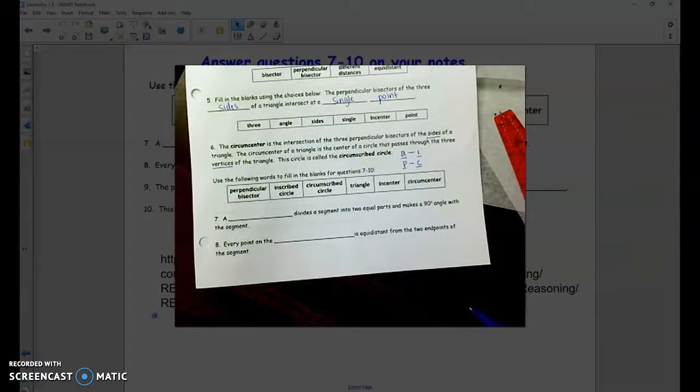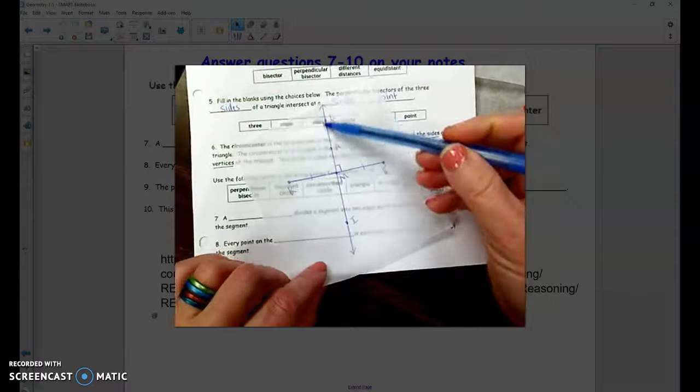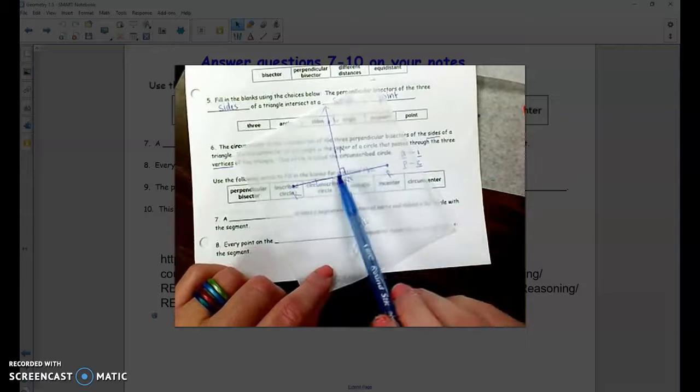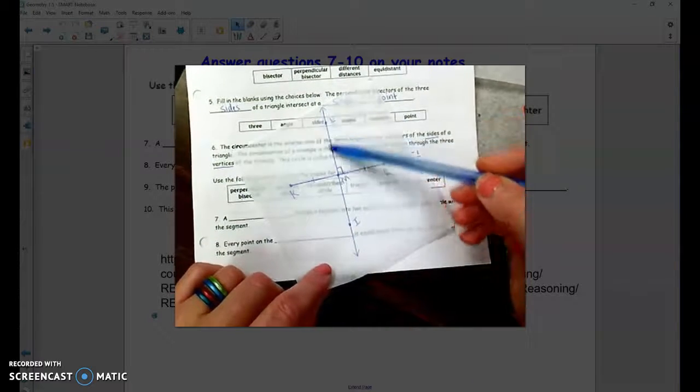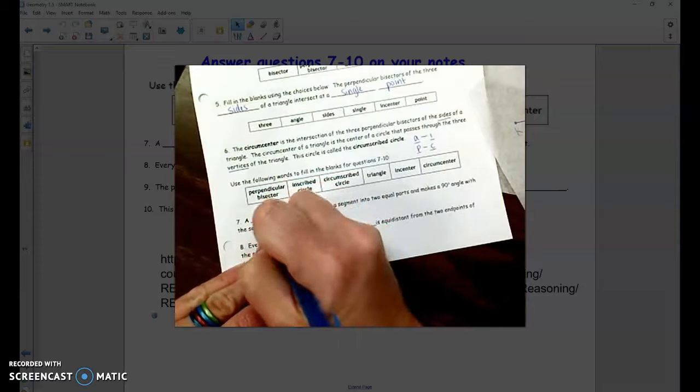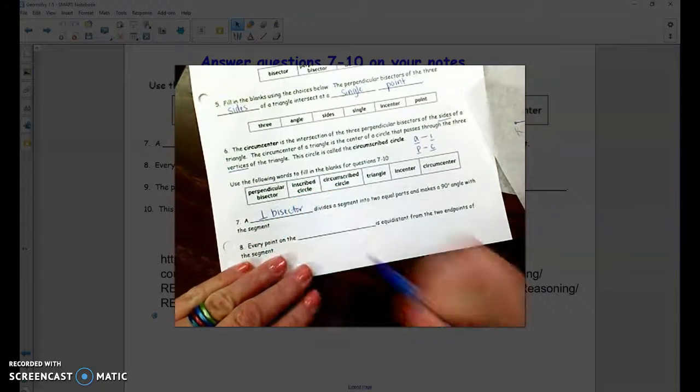a blank divides a segment into two equal parts and makes a 90 degree angle with the segment. So remember that was our first fold. This is what divided the segment to two equal parts and made the 90 degree angle. So what was this called? This was called a perpendicular bisector. So again, the symbol for perpendicular is an upside down T, perpendicular bisector.